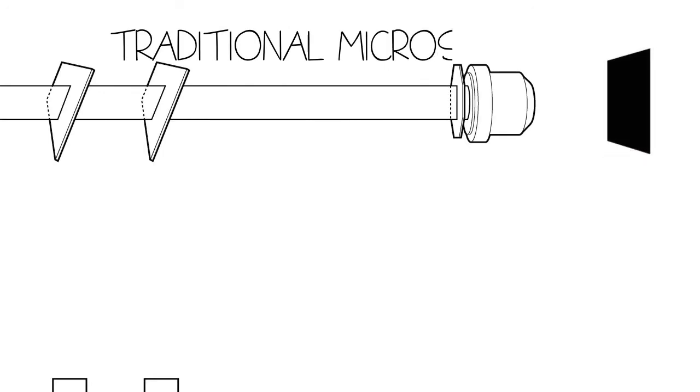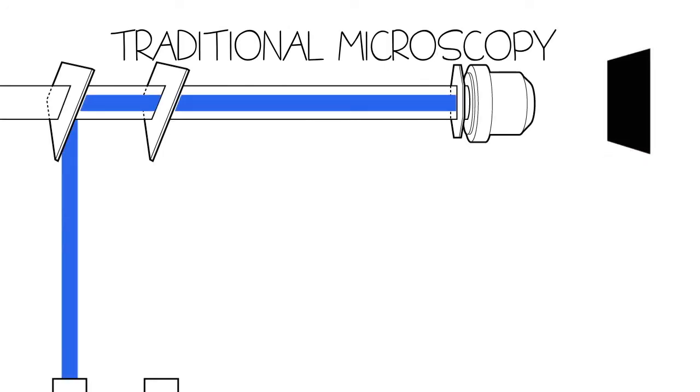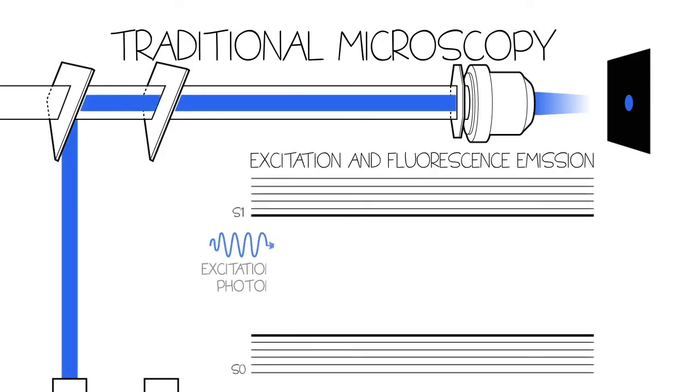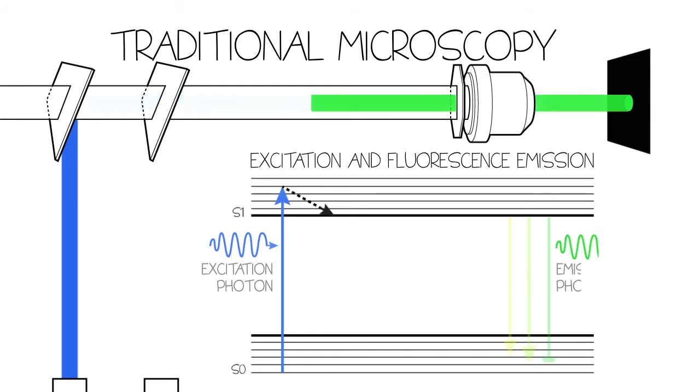STED is a point scanning method that uses an excitation laser beam focused on the sample to diffraction-limited volume. During scanning, fluorophores within this volume are shifted from the ground state to the excited state. Standard fluorescence allows fluorophores to drop down to the ground state with the release of a Stokes-shifted emission photon.